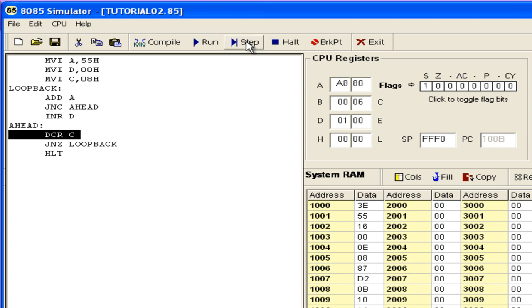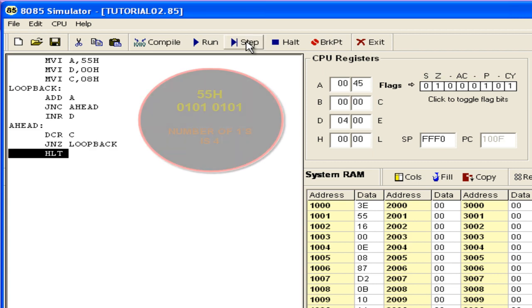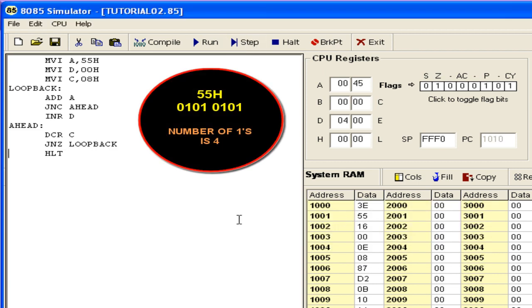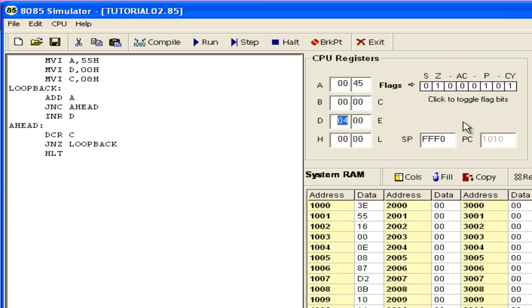In this way, the program goes on executing till the value of C becomes 0. And every time, whenever it encounters a 1, the value of D is incremented. So that brings to the end of the program and we have a value 0, 4 in D indicating that there are 4 1s in the number 55. That is 55 hex.